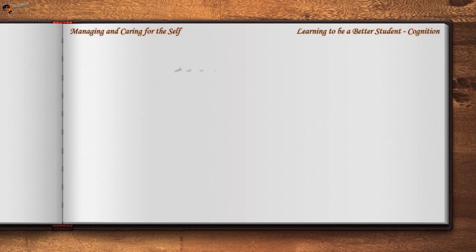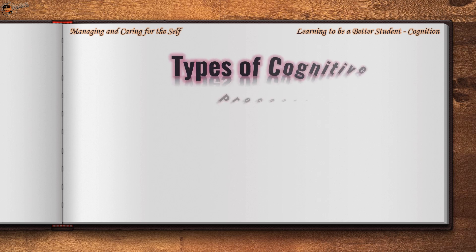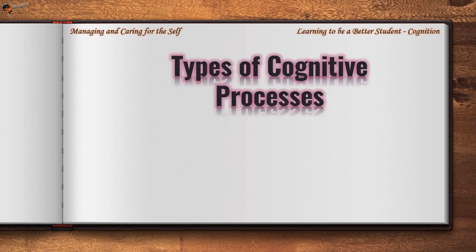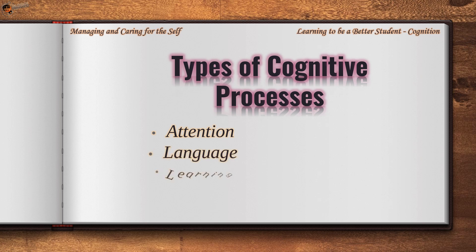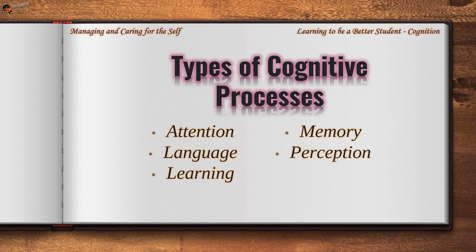There are many different types of cognitive processes. These include attention, language, learning, memory, perception, and thought.